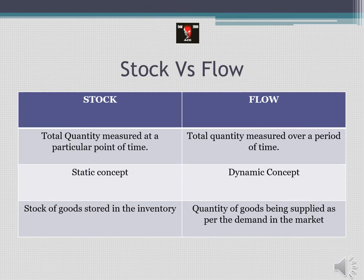Now let us see the difference between stock and flow. Stock is defined as the total quantity measured at a particular point of time, and flow is defined as a total quantity measured over a period of time. Stock is the quantity of goods, services, or any other object that we have with us at one point of time in total quantity. For example, say I am a distributor of clothes - I keep my clothes in the warehouse and at once I calculate the total quantity I have with me, so that quantity is considered to be stock.